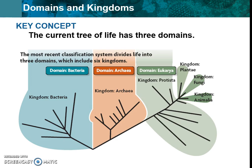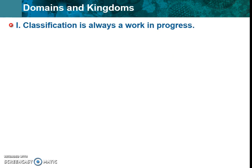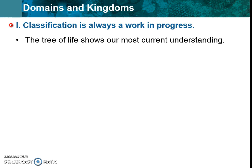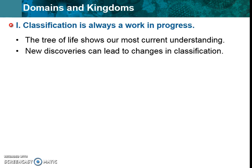So let's make more sense of this and learn about the history. Classification — grouping and naming things — is always a work in progress. We're going to see that through some examples here. For the rest of this next couple of slides, you do not need to memorize these dates. The idea is for you to see that science changes over time. The tree of life will always show our most current understanding, and new discoveries will lead to changes in how we draw the tree or how we classify.